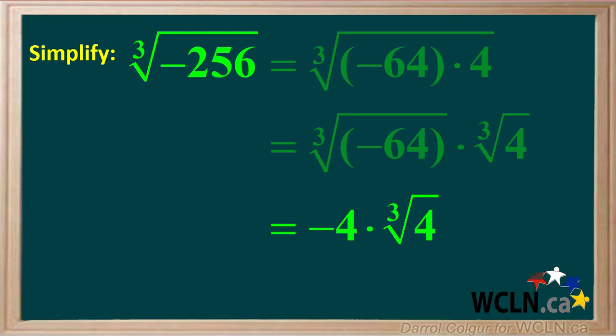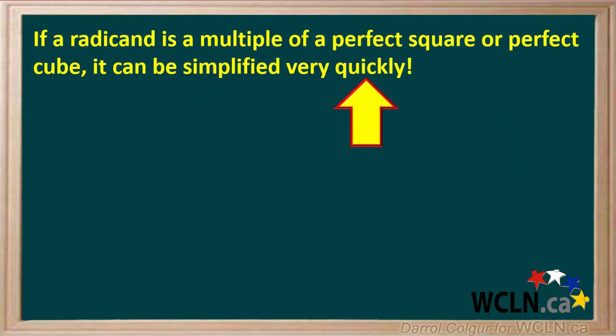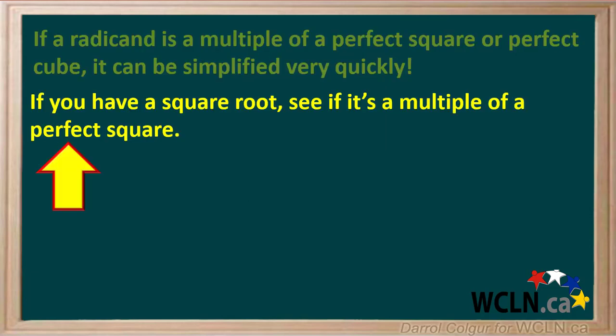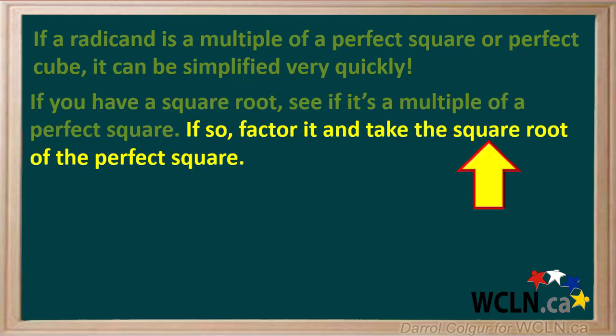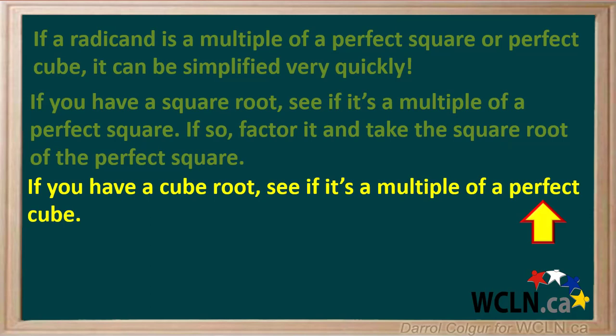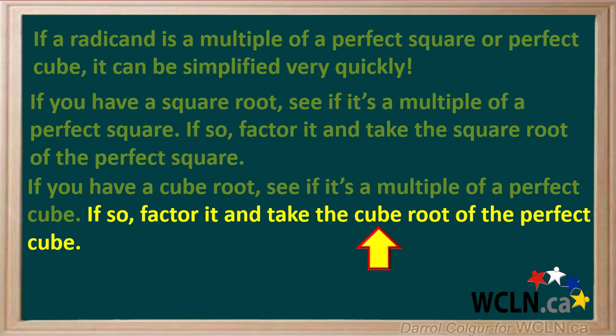You're left with negative 4 times the cube root of 4. So in summary, the cube root of negative 256 can be simplified to negative 4 times the cube root of 4. Examine radicands very closely — if a radicand is a multiple of a perfect square or perfect cube, it can be simplified quickly. If you have a square root, see if it's a multiple of a perfect square; if so, factor it and take the square root of the perfect square. If you have a cube root, see if the radicand is a multiple of a perfect cube; if so, factor it and take the cube root of the perfect cube.